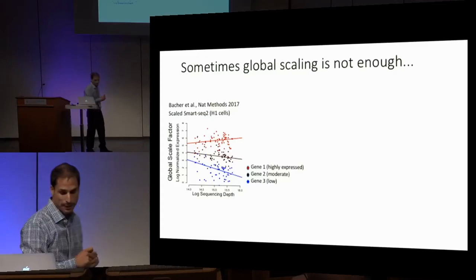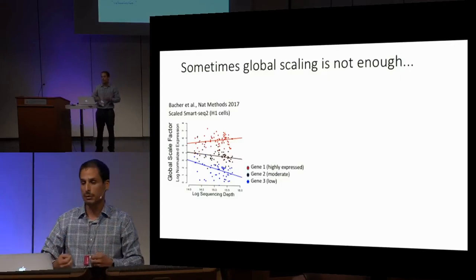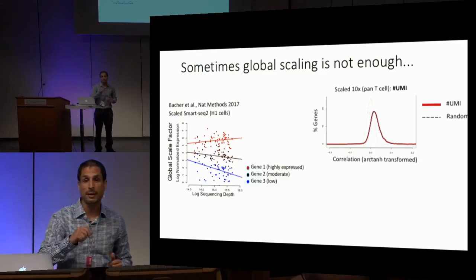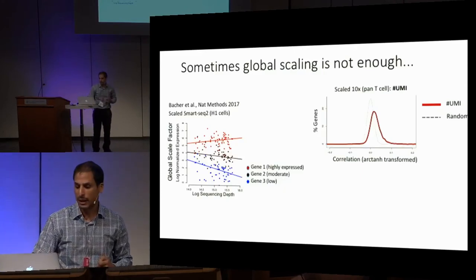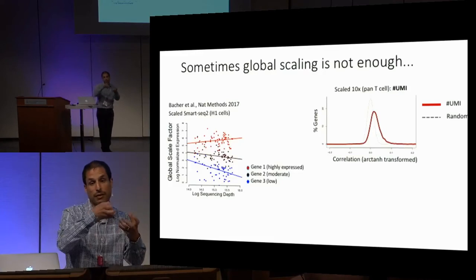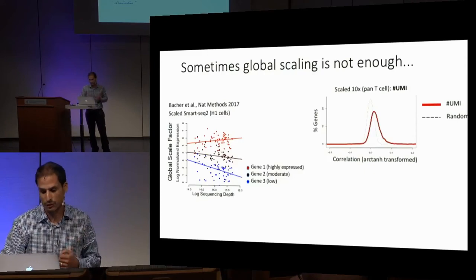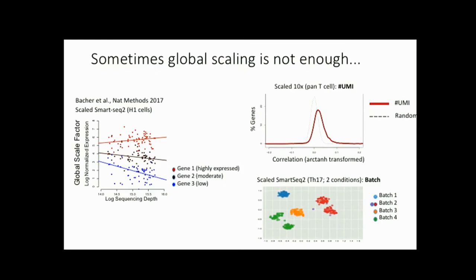A recent paper shows that even after scaling, in many genes we still see a correlation between the scaled value and library depth, and we can see the same thing in 10x data. There are other confounding factors very hard to eliminate with scaling alone, as has been shown at the bulk level. One of them is batch effects — even after scaling the T cell data, we still see very strong batch effects.